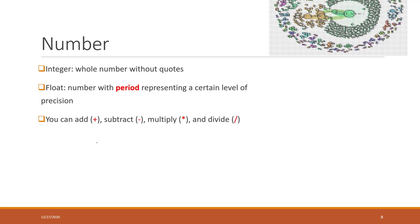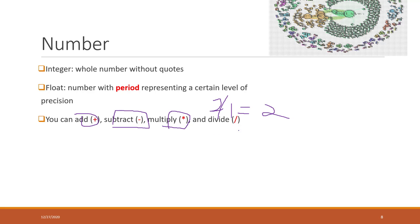We can use numbers for normal calculations. For example, 1 + 1 equals 2, 2 - 1 equals 1, 2 * 2 equals 4, and 2 / 1 equals 2. Those are the very basic calculations.